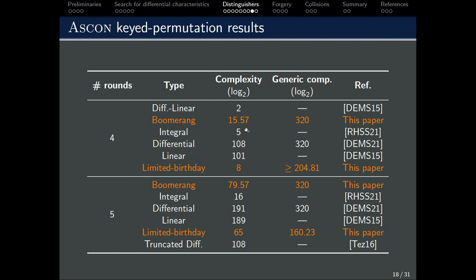Here is a summary of all the keyed permutation results for ASCON. In the next slide, we will have the summary for all the unkeyed permutations.